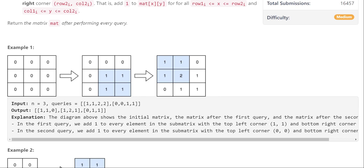For the first query, the first two values represent the cell at the upper left corner and the last two values represent the cell at the bottom right corner. Using these two locations we can form a submatrix and we have to update its value by incrementing by one. After running the first query the matrix will look like a certain state, and after running the second query it updates again. Once all queries are finished we return the updated matrix.